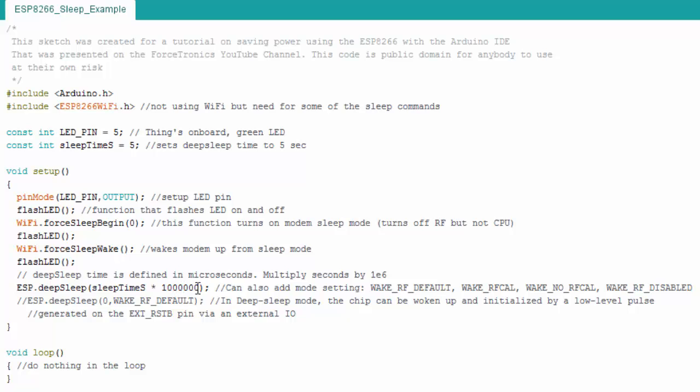Then we flash the LEDs again. Then I force it to wake up from modem sleep, turn the RF back on, then I flash the LEDs again. Then I go into deep sleep for five seconds, so this is in microseconds, so I multiply 5 by a million. I'll point out deep sleep has some other settings that I have grayed out, but one is wake RF disabled, which essentially means wake up and be in modem sleep. If you put in wake RF default, it just basically wakes up like normal.